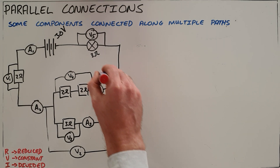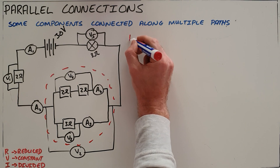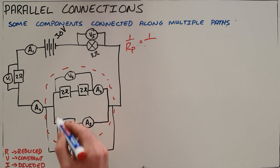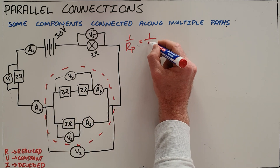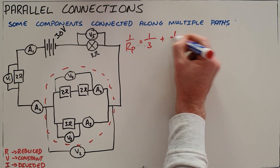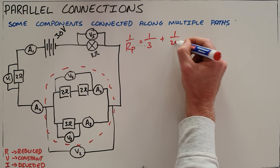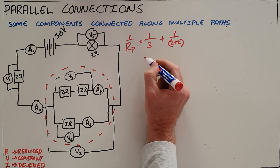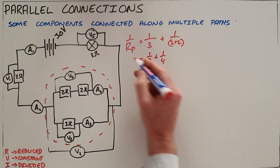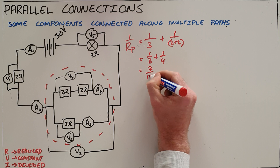The first thing you would want to do in a parallel connection is calculate what the equivalent parallel resistance is. That is done by taking the sum of each arm's resistance. In this case, 1 over the parallel resistance equals 1 over 3, plus there's 2 Ohms plus 2 Ohms in series, which gives us 1 over 3 plus 1 over 4.